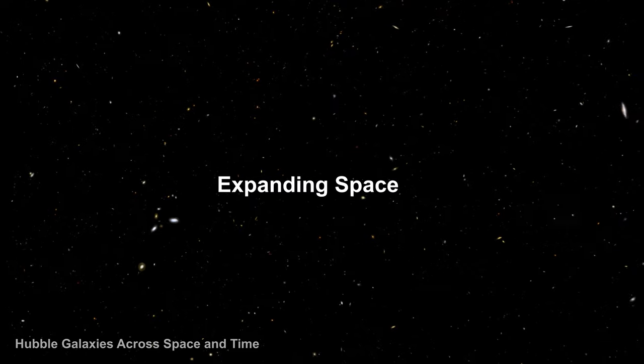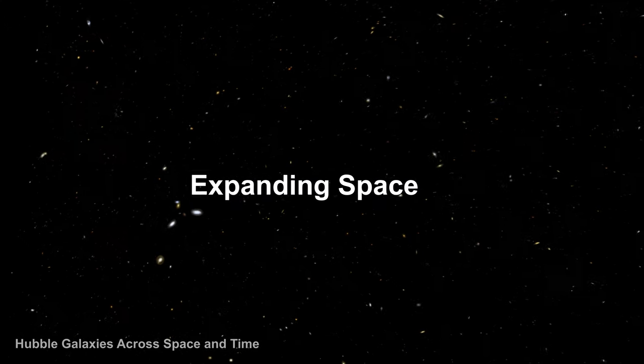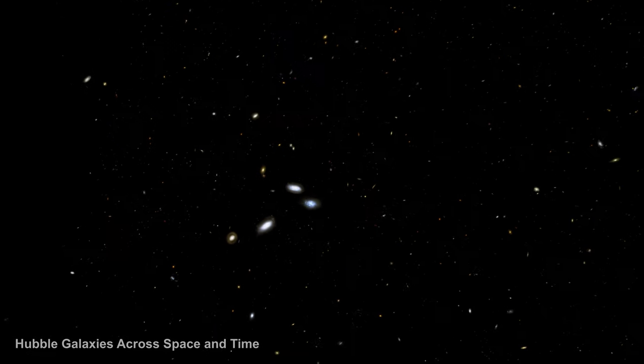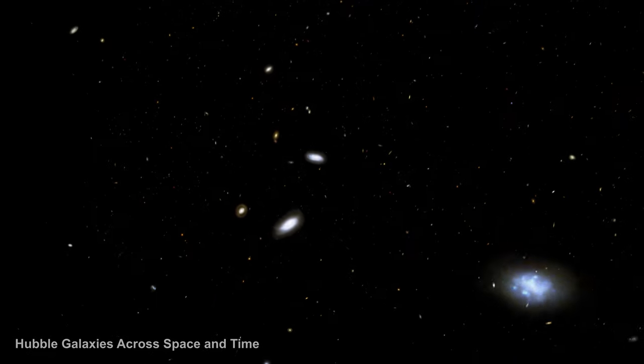In the late 1920s, Edwin Hubble discovered that except for a few nearby galaxies, all galaxies were moving away from us, and the further away they are, the faster they are moving.